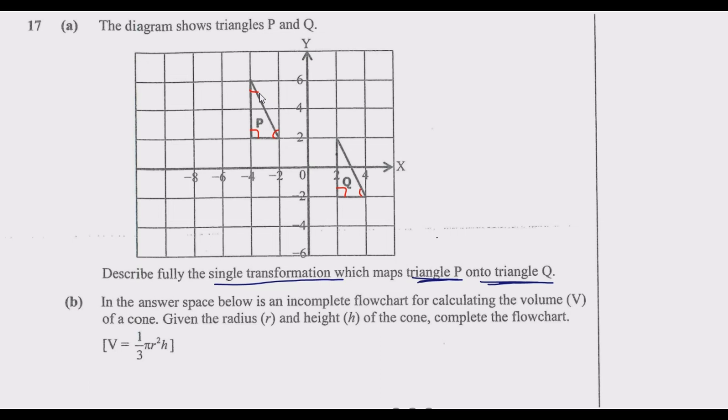If it was shear, the angles would not be preserved, but the area would be. However, because the angles are preserved, it cannot be shear. It cannot be stretching. It has to be amongst those three: rotation, reflection, or translation.